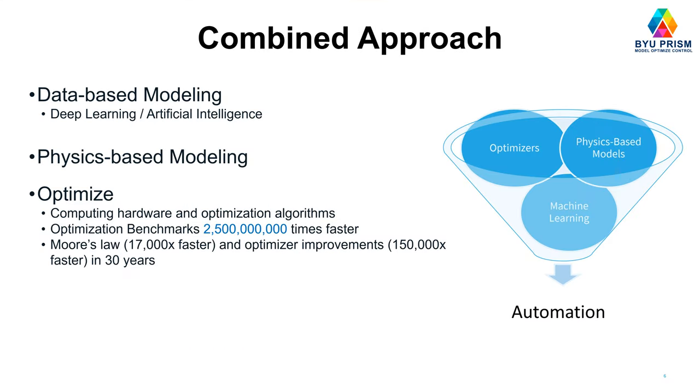So we're going to be using database modeling, deep learning, artificial intelligence to develop these solutions. We'll use physics-based modeling as well that develop from material and energy balances and momentum balances. We're going to also use optimization solvers. And one of the perspectives on this is that these solvers have really progressed in the last 30 years. If we combine Moore's law, which has given us faster computing hardware, and then algorithm improvements, we can solve some of the same benchmark problems 2.5 billion times faster than we were able to 30 years ago. And so this has really opened the door for additional automation solutions.